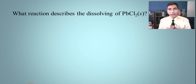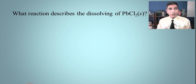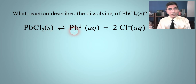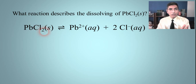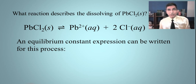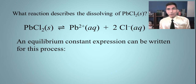It might be helpful to talk about the reaction that describes the dissolving of lead(II) chloride solid in water. We write it as an ionic compound in its solid form, and it's going to dissociate — essentially break apart into its component ions. We have lead(II) ions and chloride ions, and don't forget to balance the equation: since we have a coefficient of two, there are two chlorides produced. If you want to write an equilibrium constant expression for this process, it's done just the same way as in lesson 17 — products over reactants raised to the power of the coefficients.